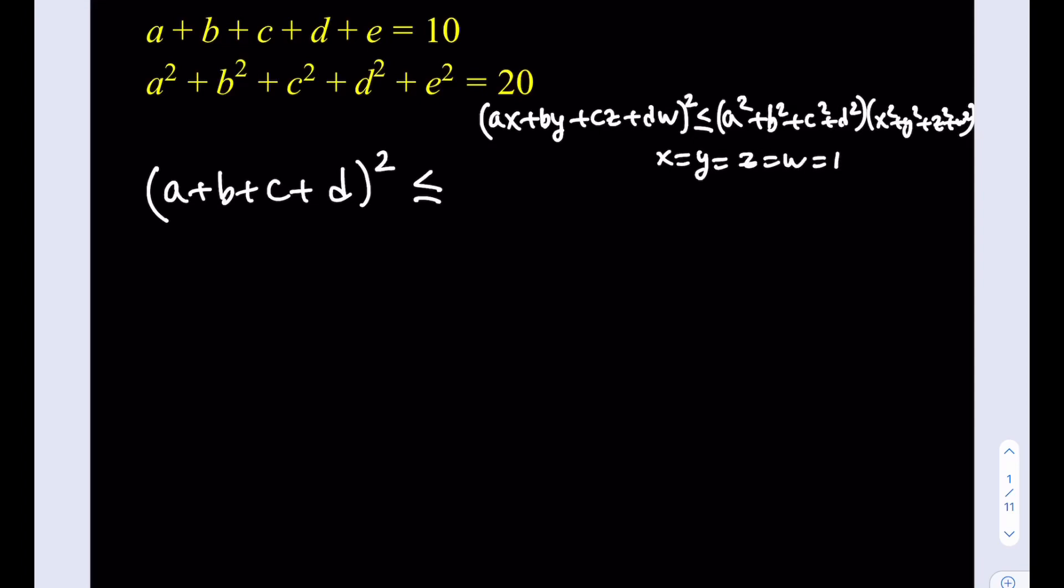Then from here, we're going to be getting... On the right-hand side, since x, y, z, w are all 1, we're going to be getting first the sum of the squares, which we can use, and then we're going to get 1+1+1+1, which is equal to 4. Awesome.